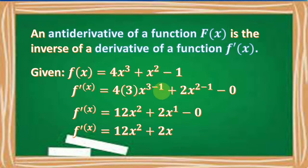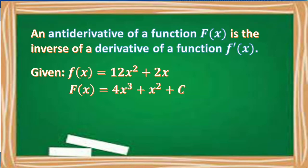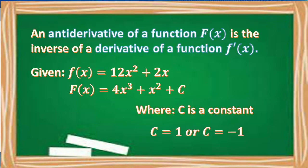Therefore, if we have F prime of x is equal to 12x squared plus 2x, it will be capital F of x is equal to 4x cubed plus x squared plus C, where C is a constant. It can be positive 1, negative 1, or any constant.